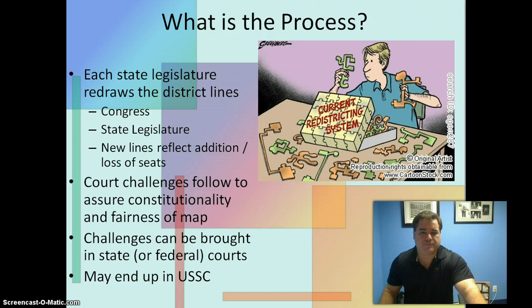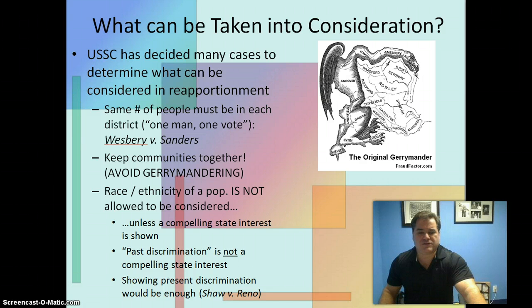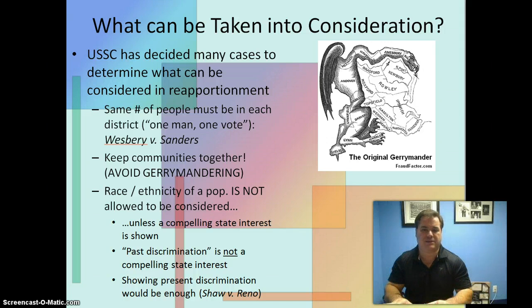What can be taken into consideration when determining whether a map is constitutional? The U.S. Supreme Court has decided many cases involving reapportionment over the past couple hundred years. One of the bedrock principles came from Westbury v. Sanders, which stands for the proposition that roughly the same number of people must be in each district — the principle of 'one man, one vote.' Congressional districts should be roughly the same size in population, because that equalizes representation amongst all people by their congressmen.